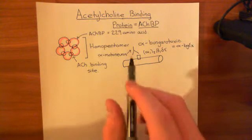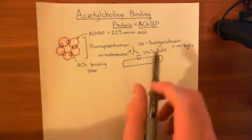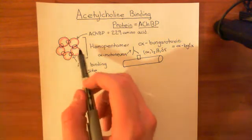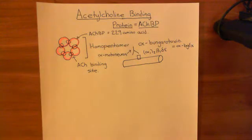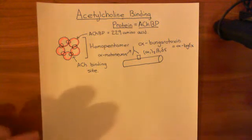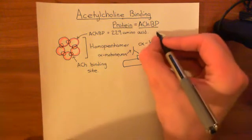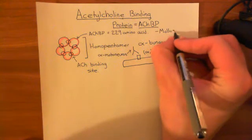Alpha-bungarotoxin will also bind to the acetylcholine binding sites of the acetylcholine binding protein, so it seems to have very similar binding sites to those on the nicotinic acetylcholine receptors. Now let's talk about what the function of this acetylcholine binding protein is within the mollusks. This is found in mollusks - invertebrates, things like snails; I think they originally found it in sea snails.